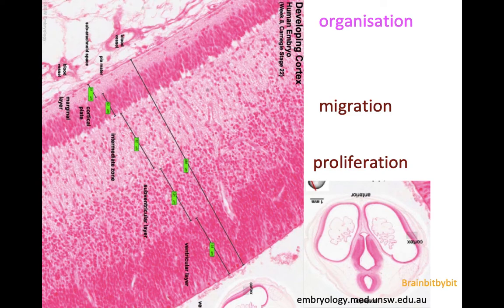This image shows the steps of cortical development: proliferation of neurons and glial cells in the ventricular layer, migration of neurons along the radial glial cells towards the cortex, and then in the cortical plate, the organization of the cortex takes place. Polymaquadjaria is a post-migrational problem, so a problem with the organization of the cortex.